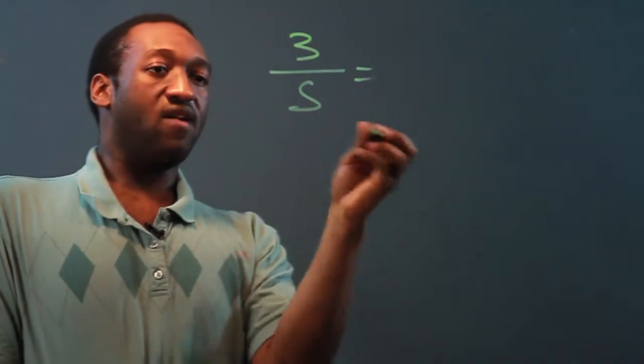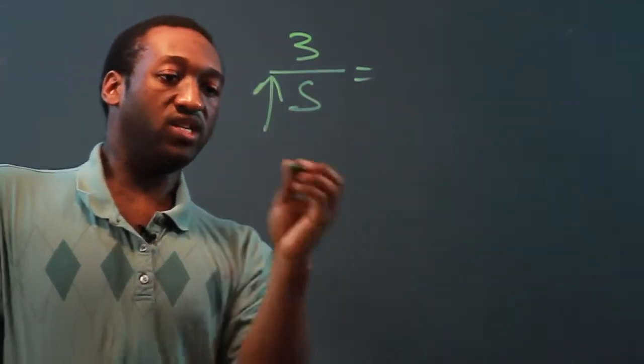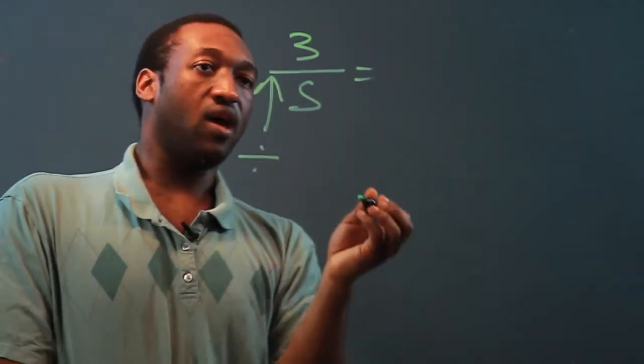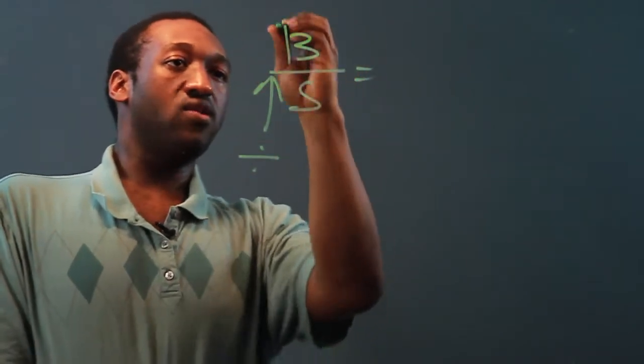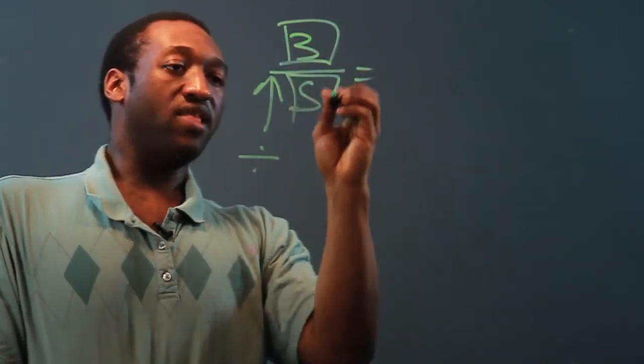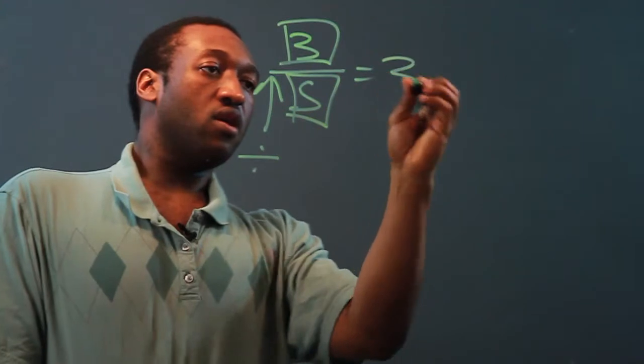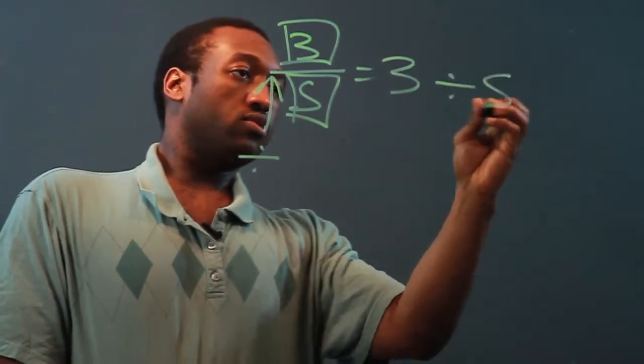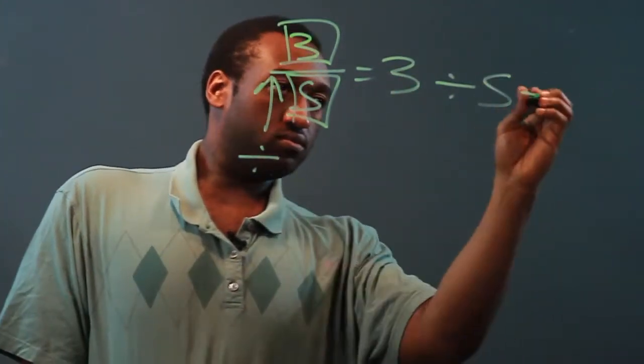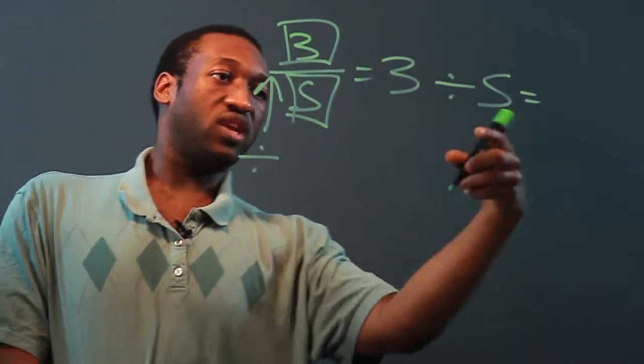3 over 5, the fraction sign is the same thing as a division sign. So that means we're going to divide the numerator, the top number, by the bottom number, the denominator. 3 divided by 5. And this is actually how we get the decimal.